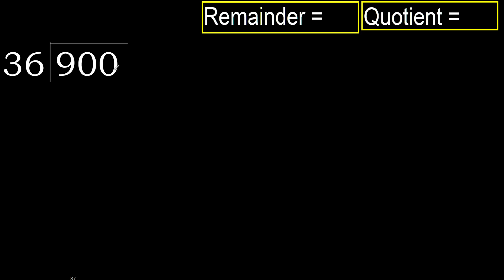900 divided by 36. 9 is less, therefore next. 90 is not less, therefore we work with 90.